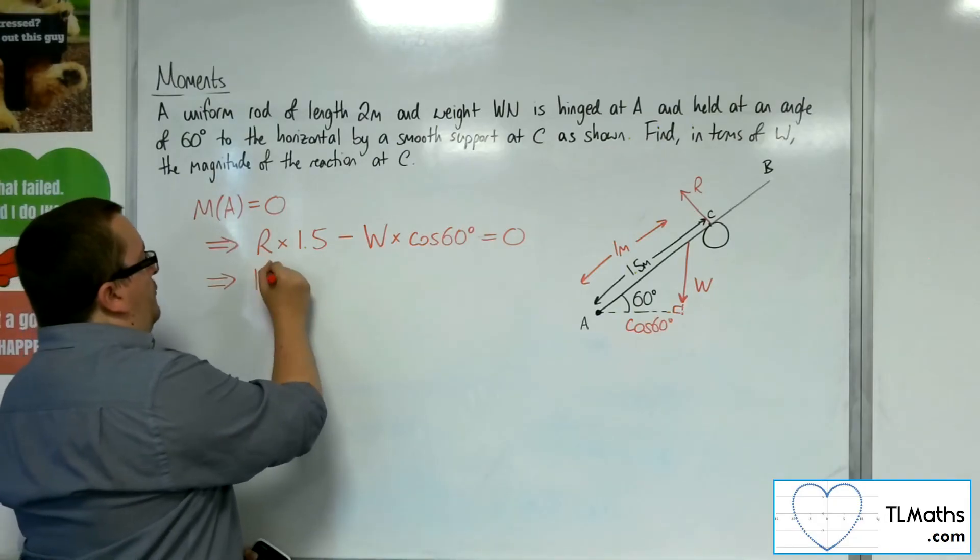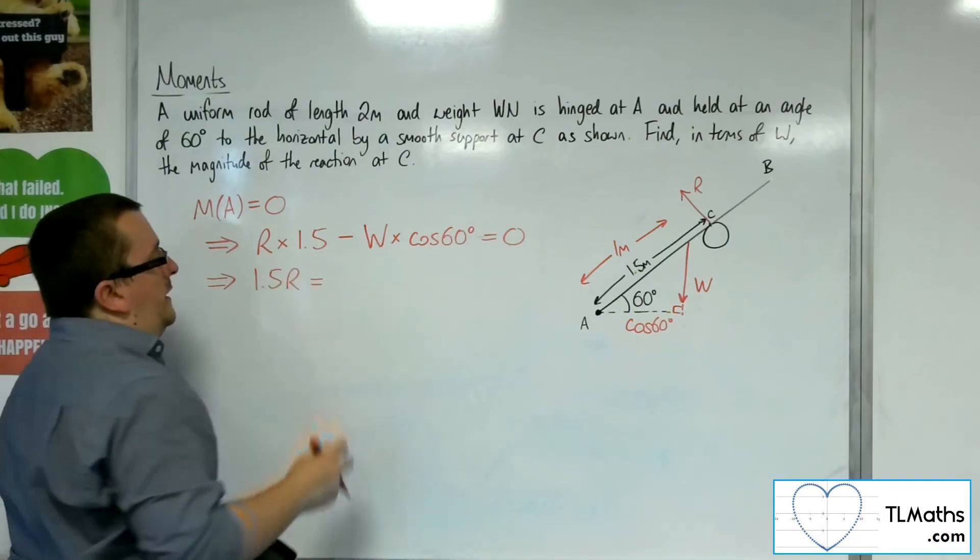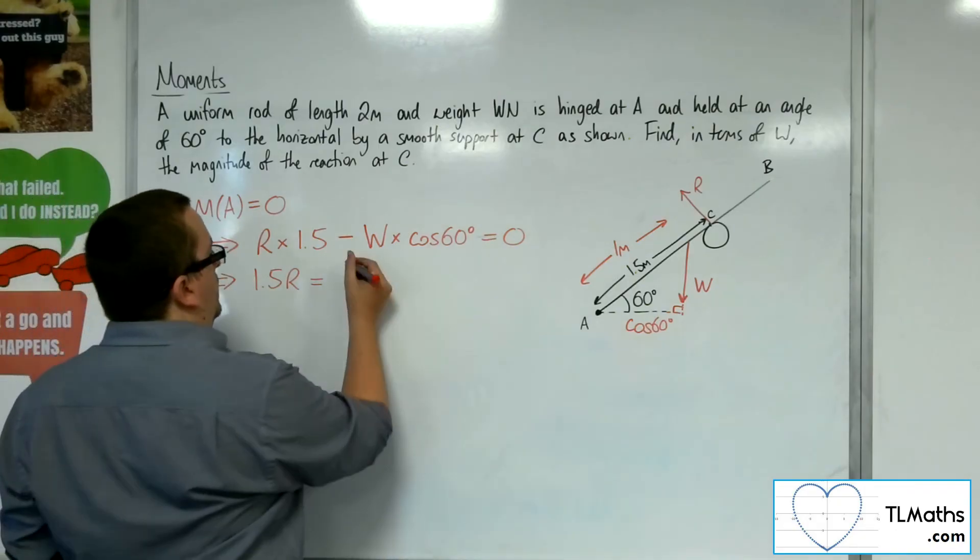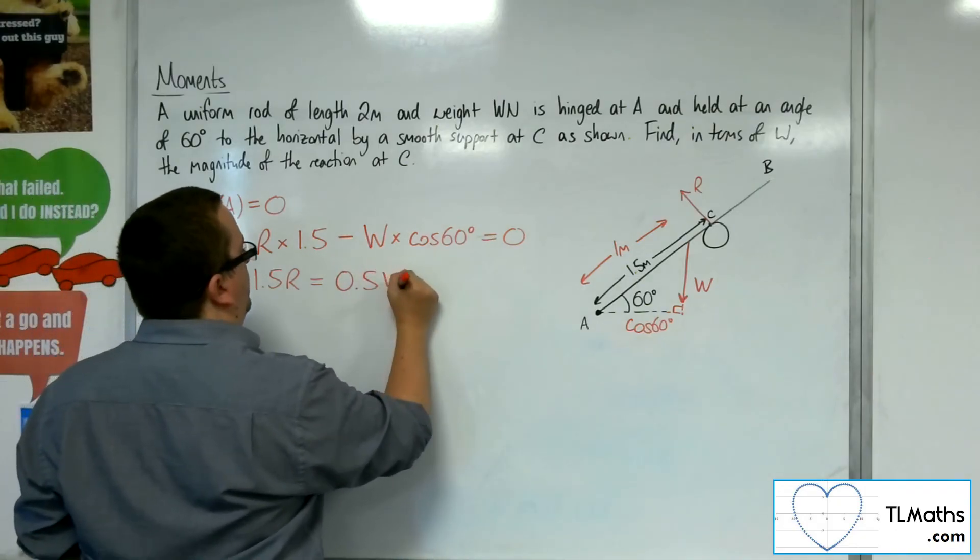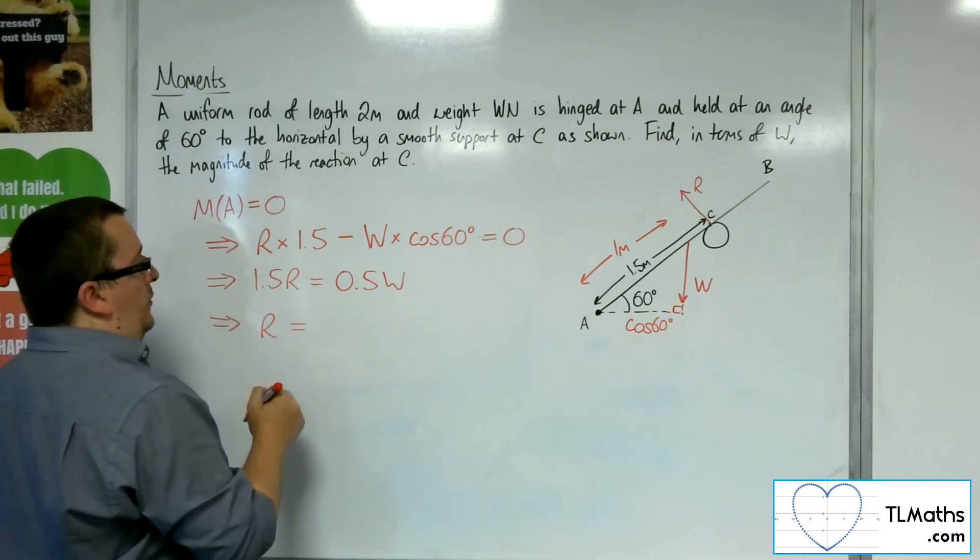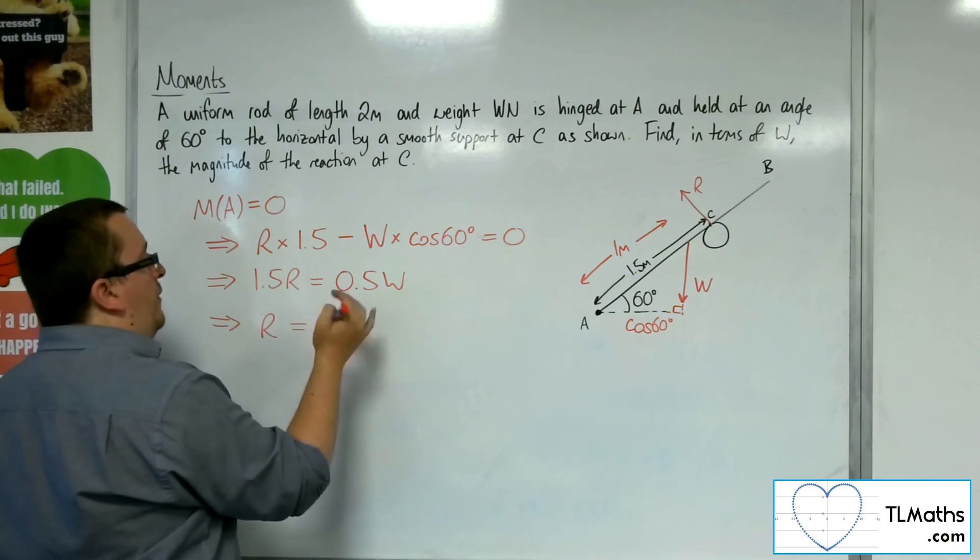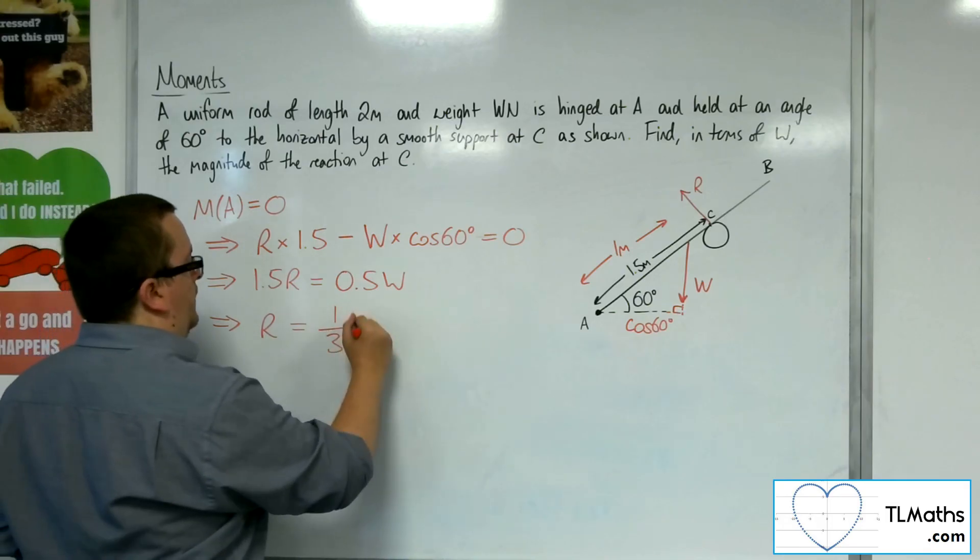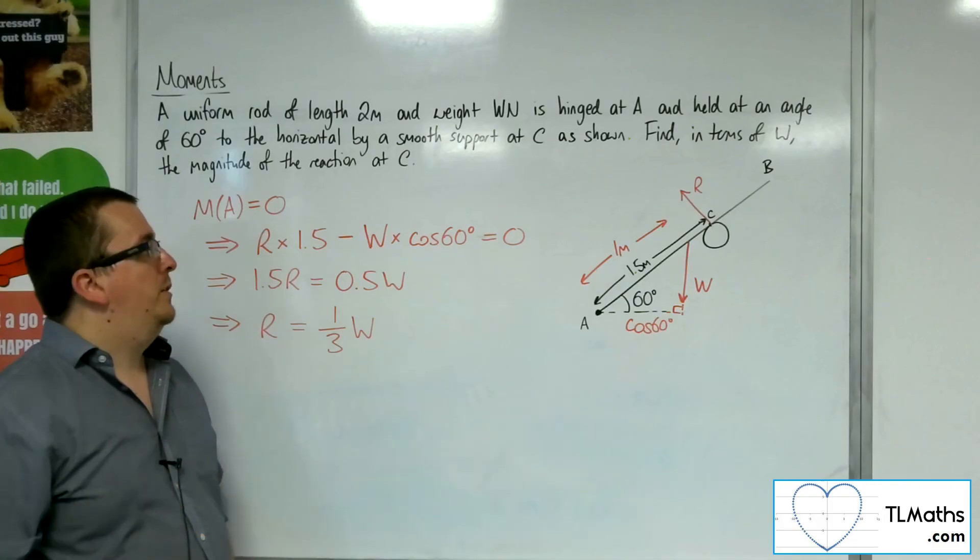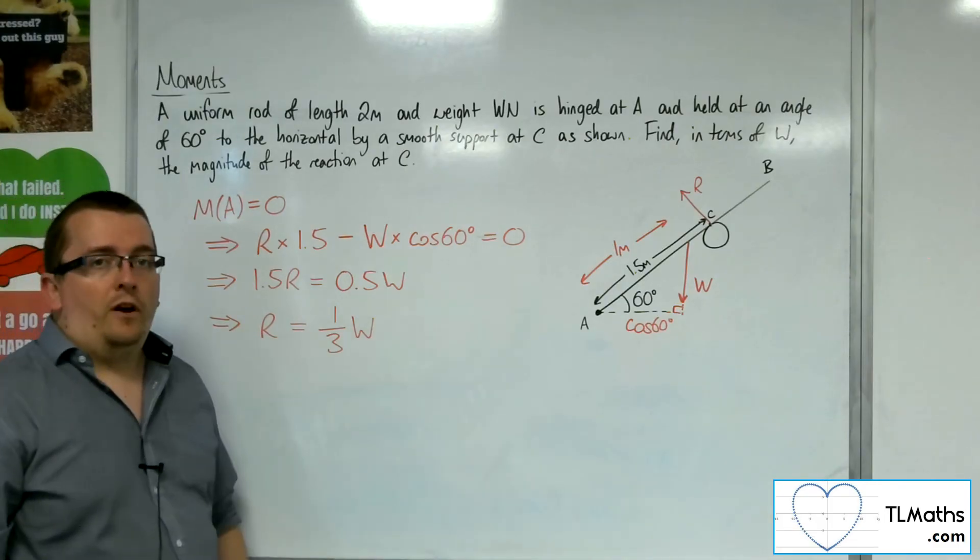So we've got 1.5R is equal to, well, cos of 60 is a half, so 0.5W. So if I do 0.5 divided by 1.5, I get a third. So R is actually 1 third of W, and that was what we needed to find.